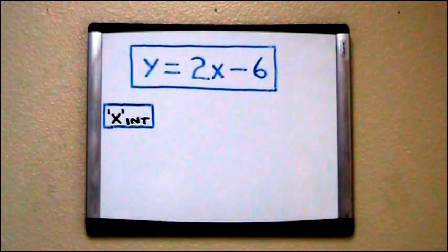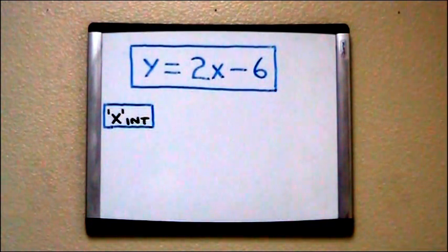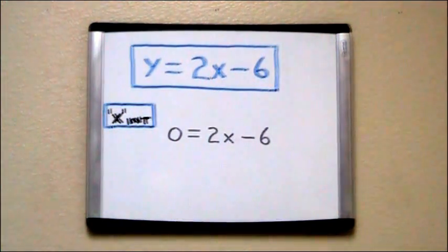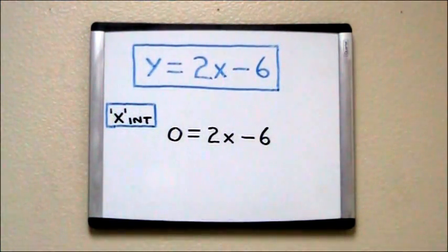In order to find the x-intercept, we replace y with 0 and work out the problem from there. Our equation becomes 0 equals 2x minus 6.